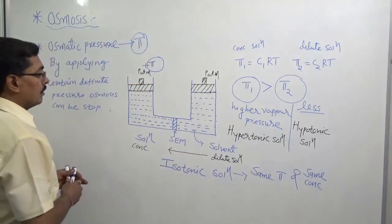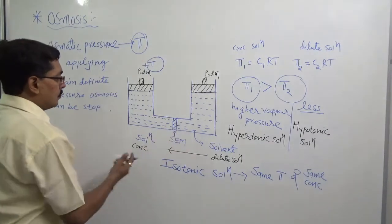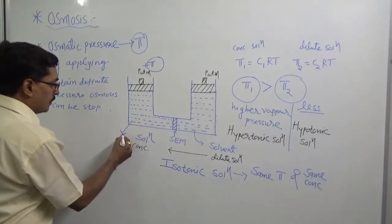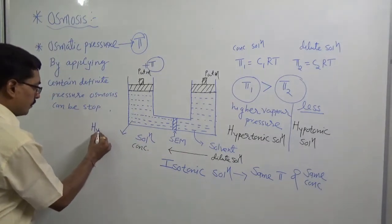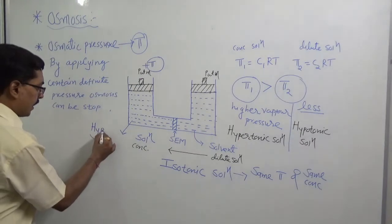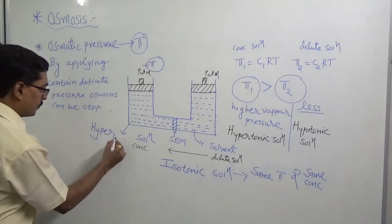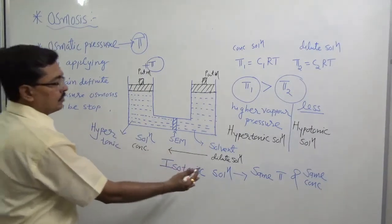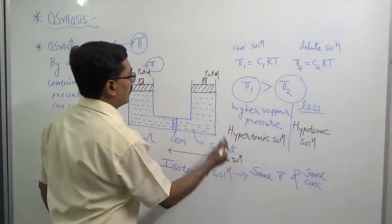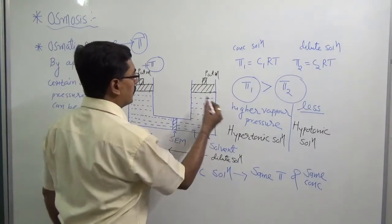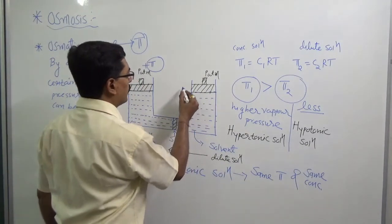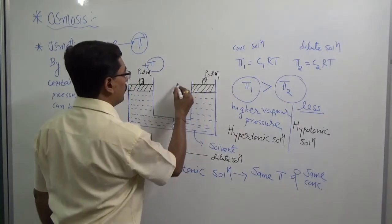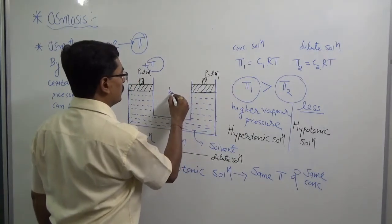So in summary: the solution with higher concentration and higher osmotic pressure is a hypertonic solution. The solution with lower concentration and lower osmotic pressure is considered a hypotonic solution.